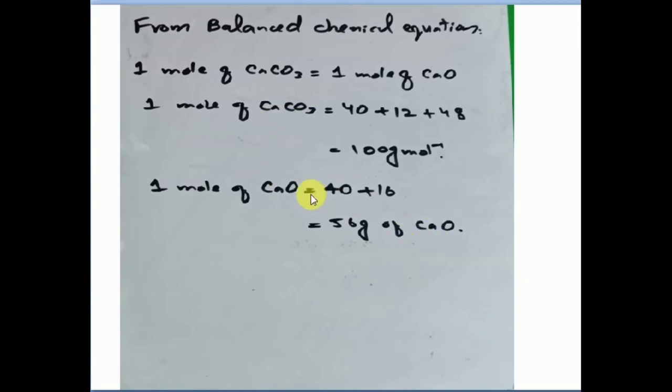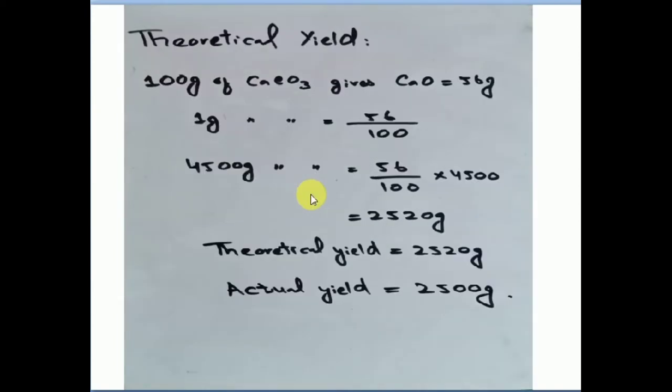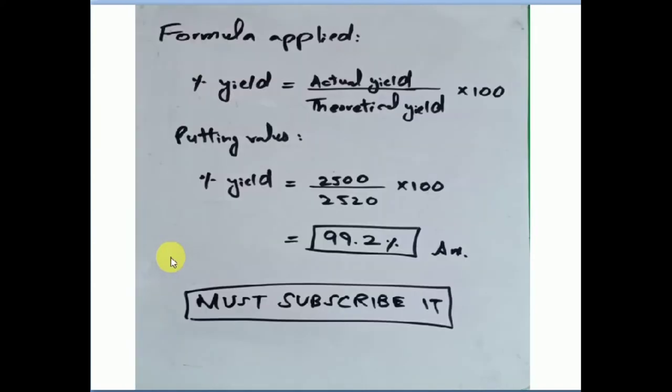So now we have data. What is our theoretical yield? As we see here, 100 grams of CaCO3 is 56 grams. So 1 gram is how much time it will be? 56 over 100 gram. So how much time it will be? We have 2520 gram. We will have theoretical yield. Actual yield was given to us. We will put it in the formula. The formula is equal to actual yield over theoretical yield multiply 100. So here we have put values in the formula and we have taken the answer 99.2%. This is the efficiency of chemical reaction.